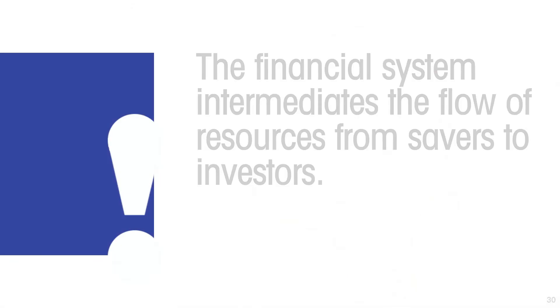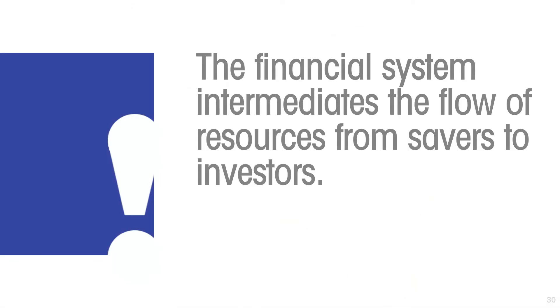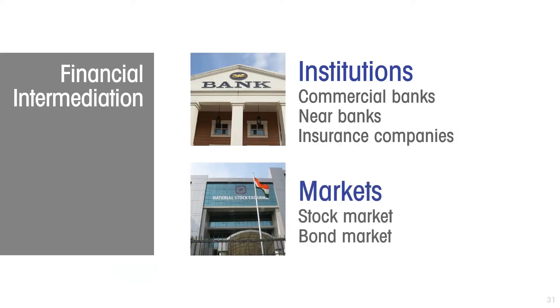That is the purpose of an economy's financial system: to intermediate the flow of resources from savers to investors. How does it do this? There are two channels. One is within the institutions in the financial sector — commercial banks and near banks like credit unions and building societies, and through insurance companies.